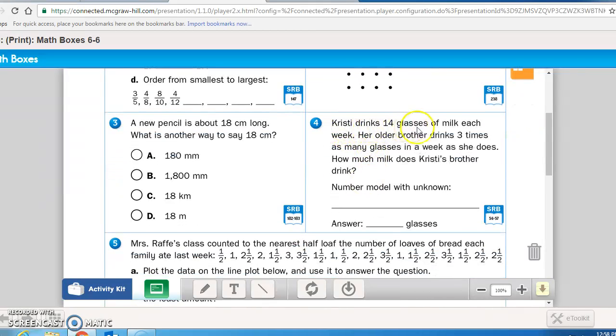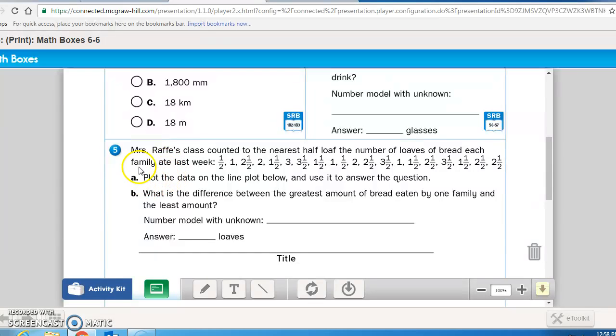Math box four, Christy drinks 14 glasses of milk each week. Her older brother drinks three times as many glasses in a week as she does. How much milk does Christy's brother drink in all? Use the numbers given, show the number model with the unknown, and then give me the exact answer.